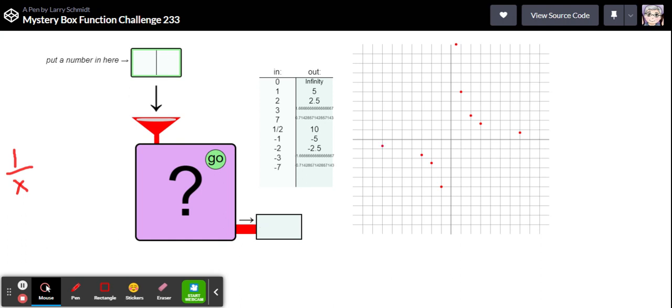Okay so all of this looks like what I would expect for this function one over x except when I put in one I get five and that doesn't work, but otherwise it looks like it right. So I think it's something very close to one over x.